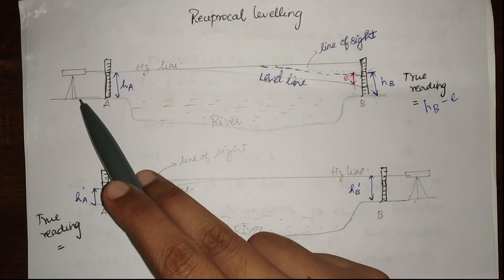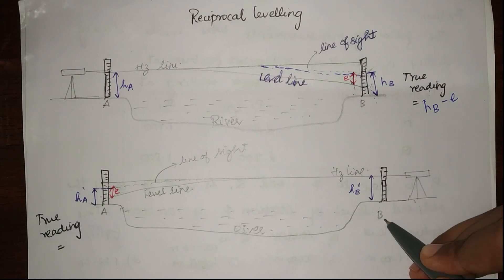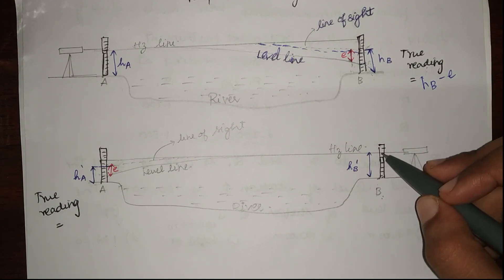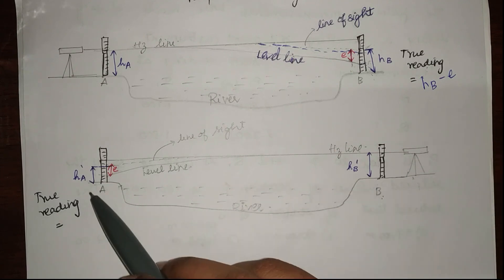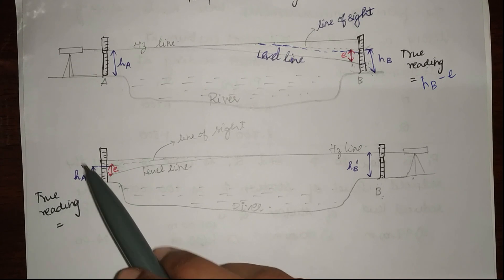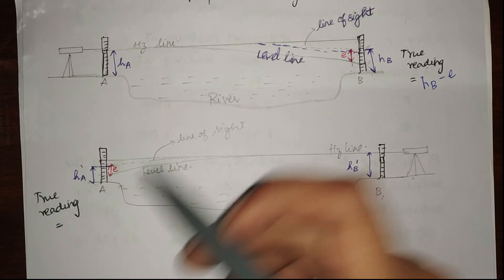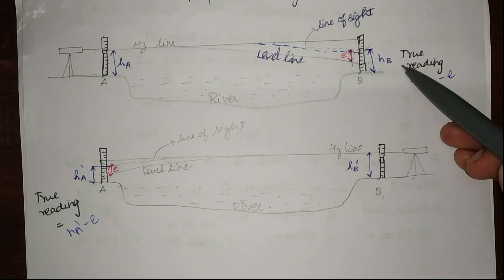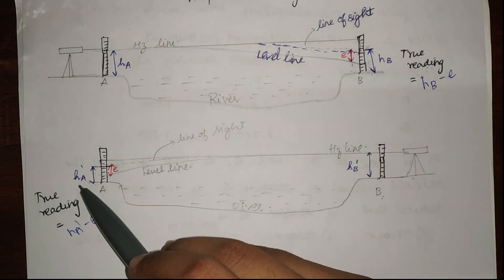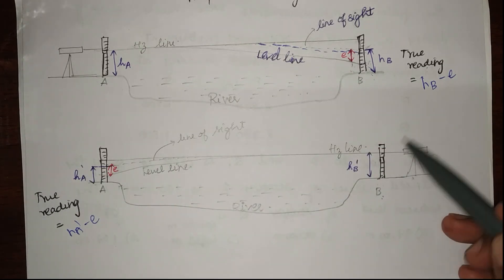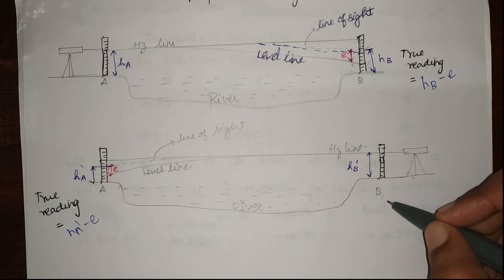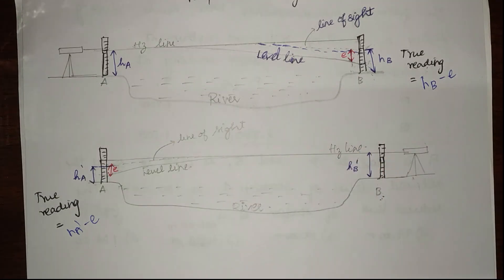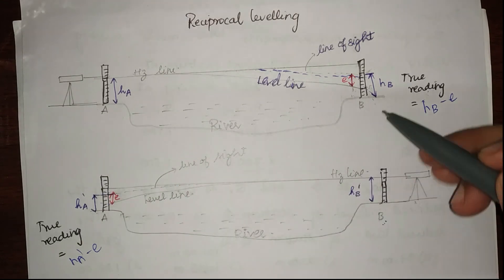Similarly, we are going to set up the leveling instrument very close to B in the next set of readings. Since I'm placing the instrument very close to B, the reading from that staff is going to be free from any curvature error. Whereas when I take the reading at the other staff there will occur a curvature error, and therefore my true reading will be something like hA' minus e. Note that hA, hB, hB', hA' — the readings taken from the station close to the point whose RL we don't know — have dash values in them.